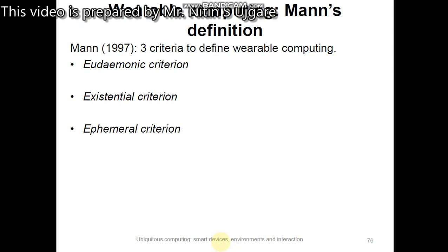Mann has defined three criteria for wearable computing. The first is the eudaimonic criterion, which defines that the ICT device appears to be part of the user as considered by both the user and the observer. In the existential criterion, ICT devices are controllable by the user — this control need not require any conscious thought or effort, but the locus of control must be within the user's domain.